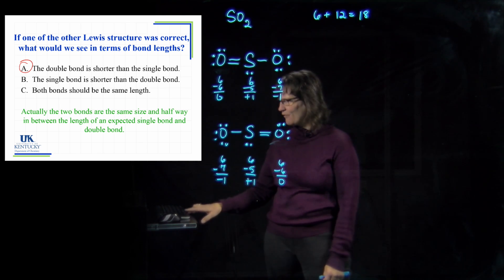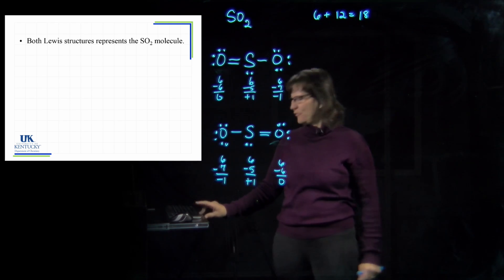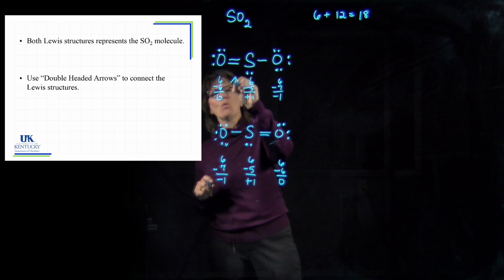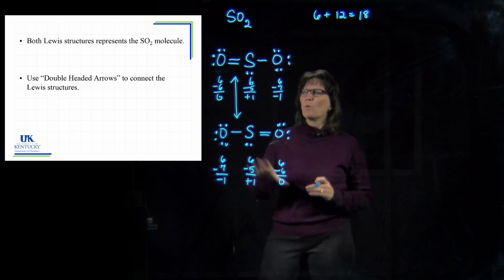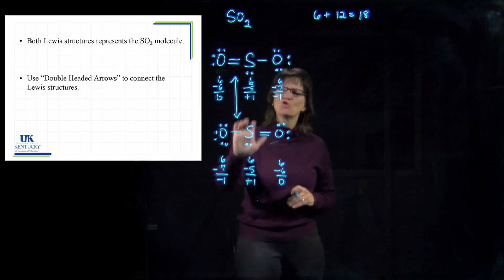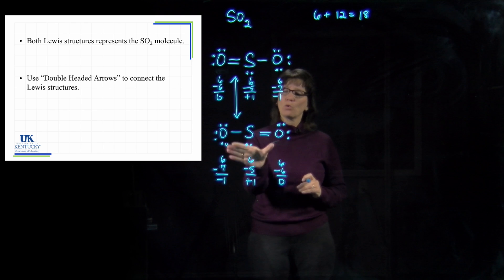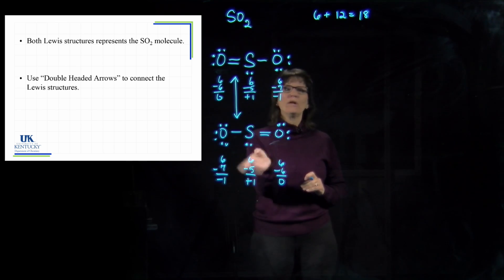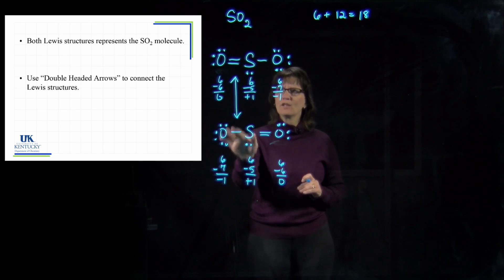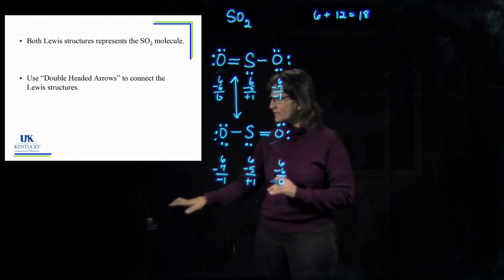So it's kind of like a bond and a half — one and a half bonds. Both structures together are a depiction of the real molecule. What we do is put a double-headed arrow between them, and what we're saying is these are resonance structures of each other. These two contribute to the reality of the molecule. Neither one alone is a good description of SO2, because if it were, we'd have a long bond and a short bond. Instead, we see equivalent bonds — it's an averaging out. A single and a double bond average to a bond and a half.